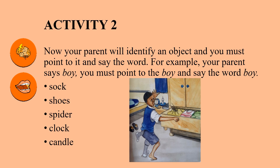Activity 2. Now your parent will say an object and you must point to it and say the word. For example, your parent says 'boy' and you must point to the boy and say the word 'boy'. Now point to the following objects and say the word.